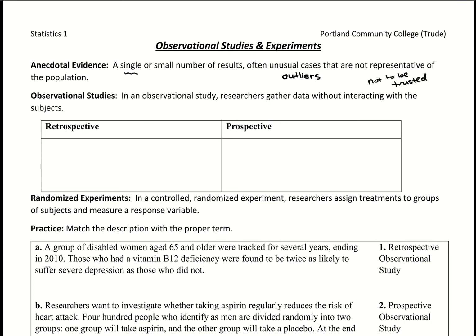Next are observational studies. In an observational study, researchers gather data without interacting with the subjects — they're not manipulating anything. The key here is that they only observe: they watch and record.